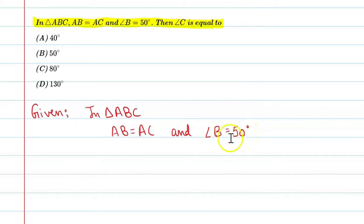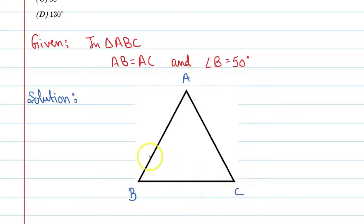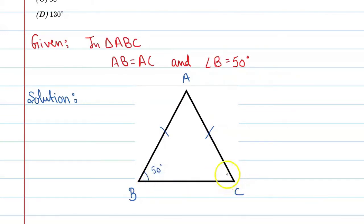Let's see the figure. This is a triangle named ABC. It is given that side AB is equal to AC, and angle B is equal to 50 degrees. We need to find angle C.